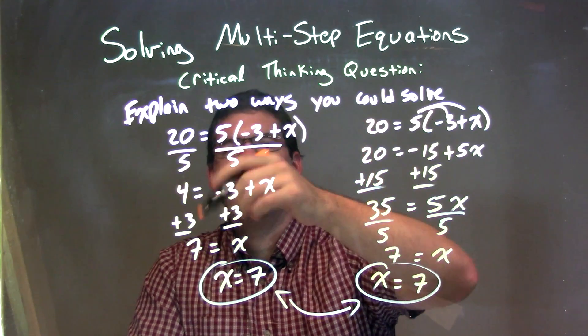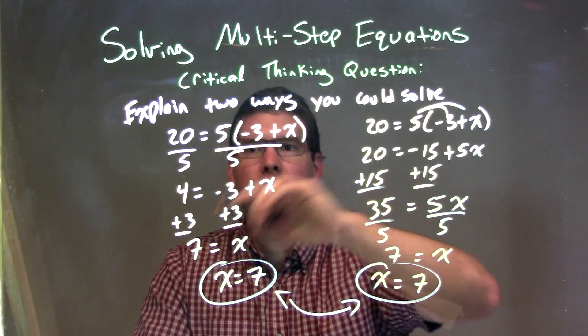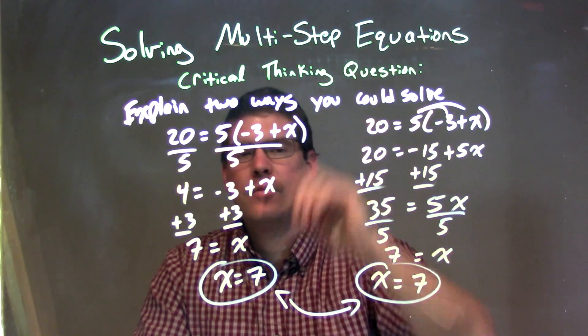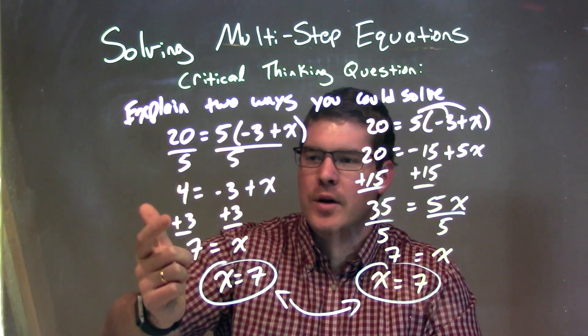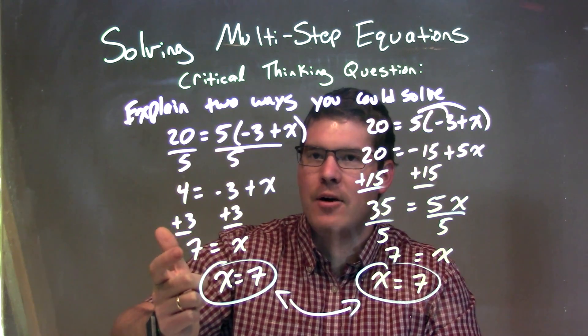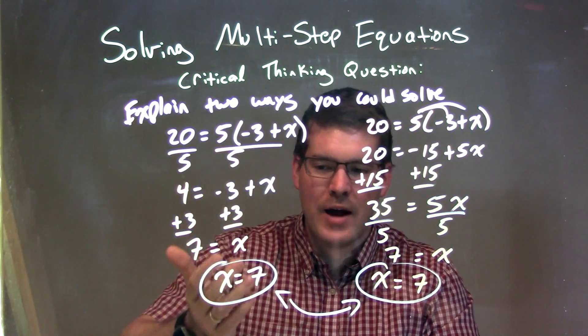So let's recap. We needed to explain two ways to solve 20 = 5(-3 + x). The first method, I divided by 5 to both sides, got 4, and added 3 to both sides to get 7. And so I was left with just 7 = x, or x = 7.